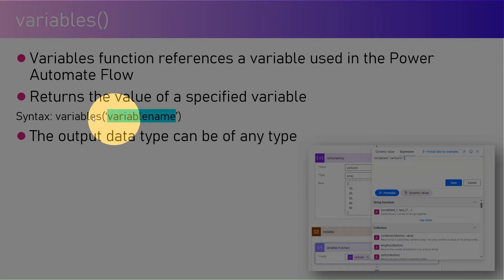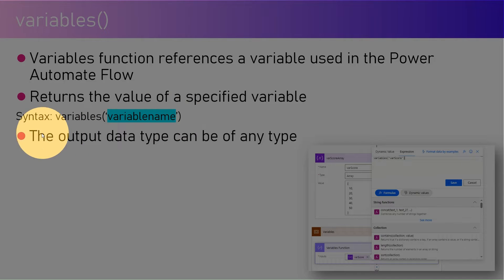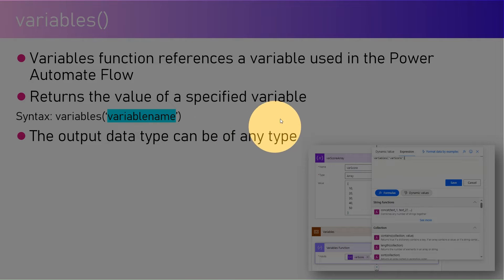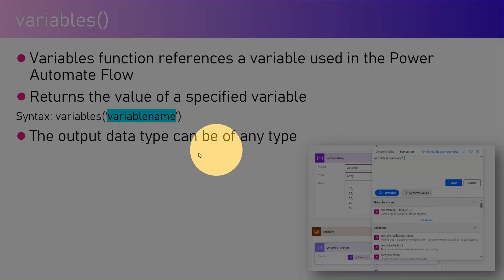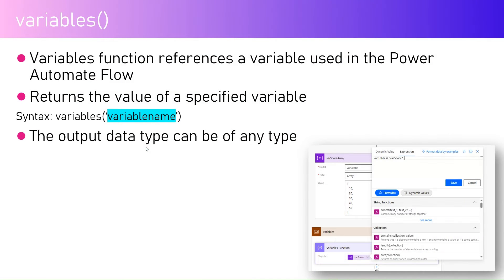The variables function returns the value of a specified variable. The syntax is: variables(), with the name of the variable in single quotes. The output data type can be of any type — string, array, or boolean — and the output will match the same data type as the variable.